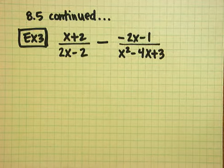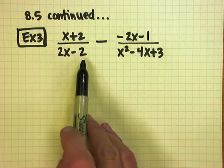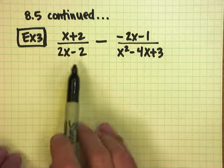To start with, we're going to factor, because we need to see what x squared minus 4x plus 3 and 2x minus 2 have in common. It's not obvious until you factor it out.